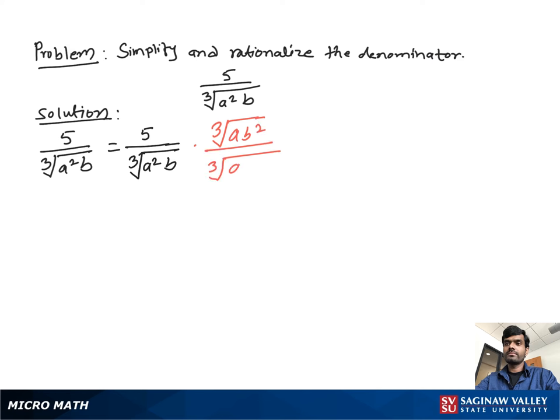So what we do: multiply both numerator and denominator by cube root of a times b squared. Then we get 5 times cube root of ab² over cube root of a³ times b³. Then we finally get 5 times cube root of ab² over ab, and this is our final answer.